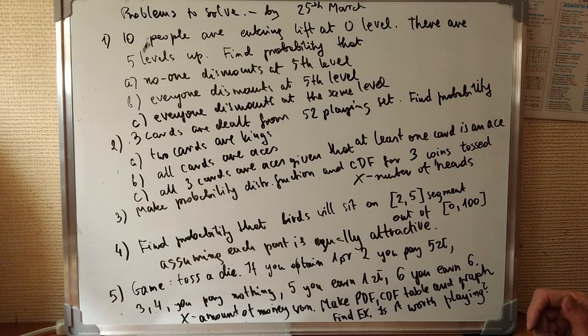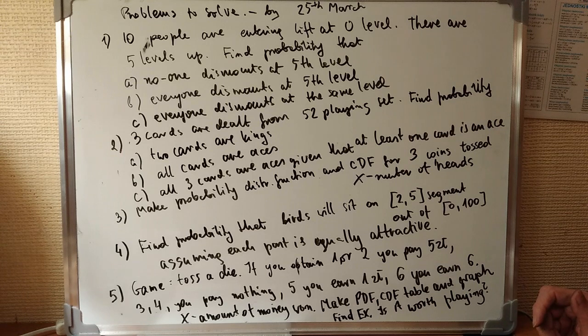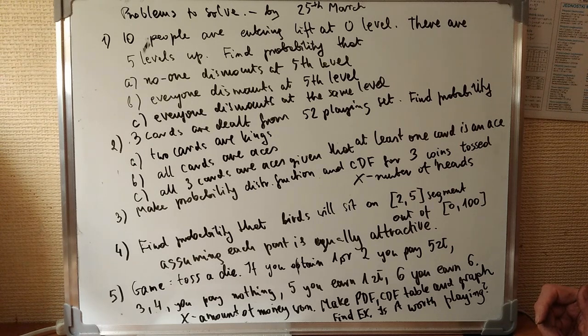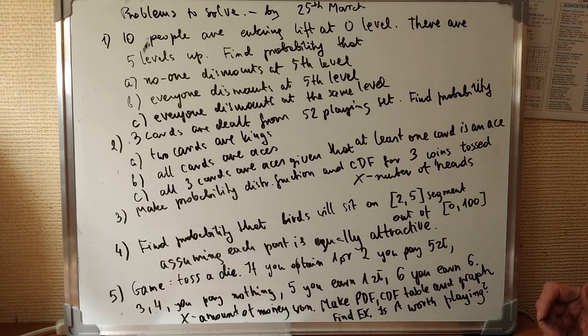Question one. Ten people are entering lift at zero level. There are five levels up. Find the probability that: A, no one dismounts at fifth level; B, everyone dismounts at fifth level; and C, everyone dismounts at the same level.